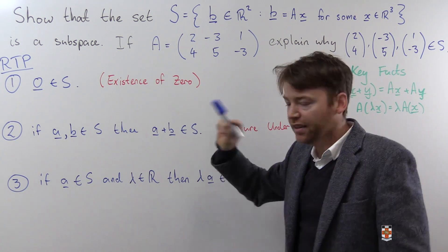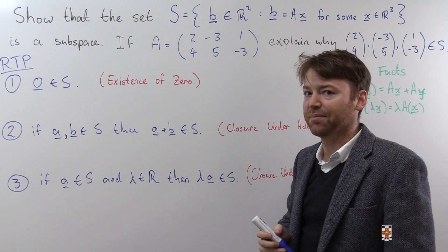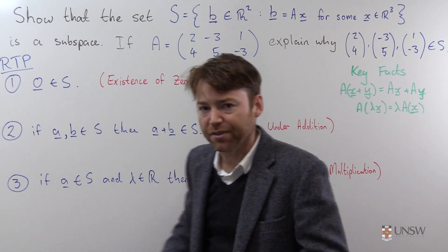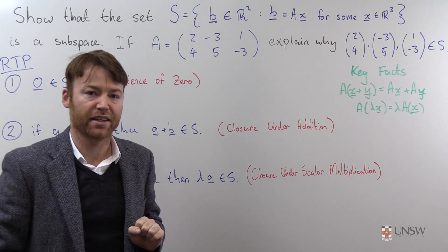If you can prove them, then you can claim that S is a vector space by the subspace theorem. And that's what we're going to do in part one of this video. In the second part we are going to then have a look at what this space actually looks like.